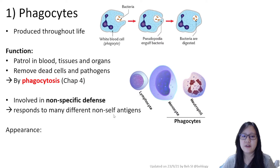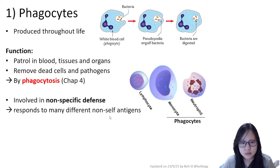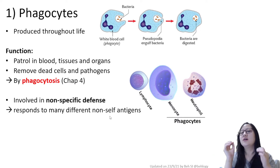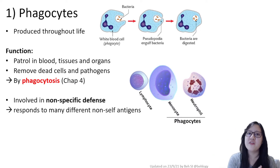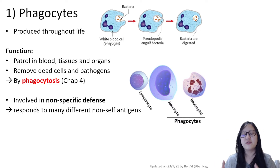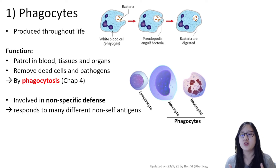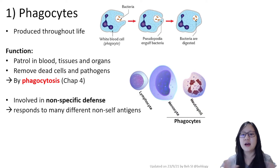Phagocytes have receptors to differentiate between self markers and non-self antigens. Whenever they detect something that is not self, they attack it regardless of what it is — hence it is a non-specific defense.